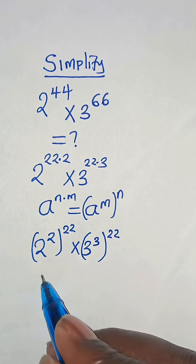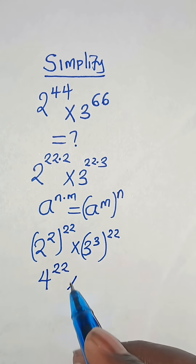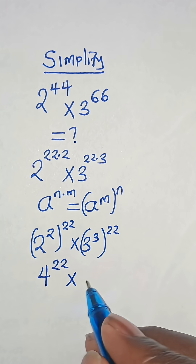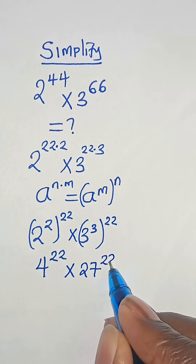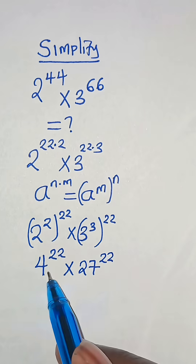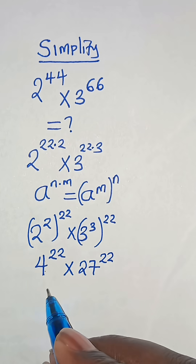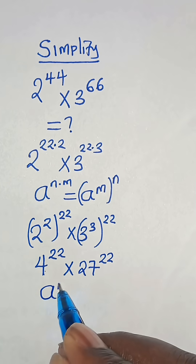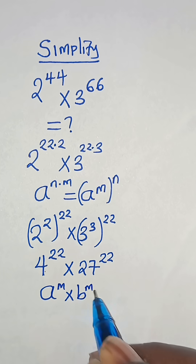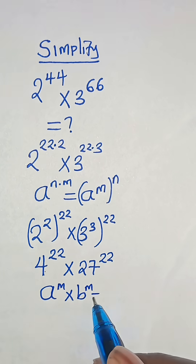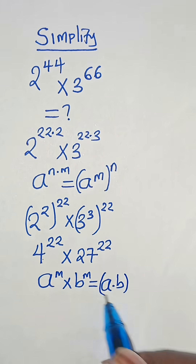2 to the power of 2 is 4, raised to the power of 22. 3 to the power of 3 is 27, raised to the power of 22. So 4 to the power of 22 times 27 to the power of 22 is in the form of A to the power of M times B to the power of M, which we can express as A times B raised to the power of M.